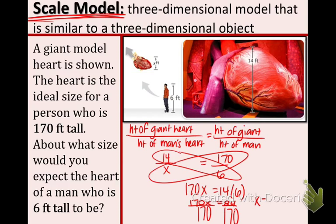Divide both sides by 170. And, you get x equals approximately .49 feet. So, that is the height of the heart of the normal sized man.